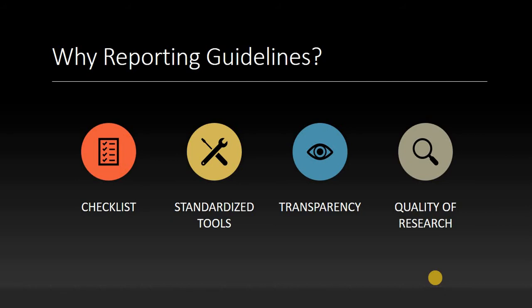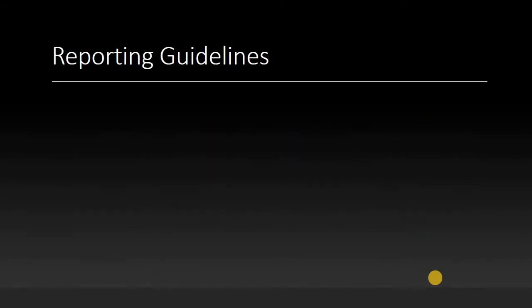We can use these reporting guidelines in three important ways. First, when we are writing our own manuscript, we can use these reporting guidelines and maintain the standard of our research paper. Secondly, when we are doing a peer review or reviewing an article, we can use these reporting guidelines as an objective assessment for the quality of the article. Third, when we are critiquing a journal in our journal club presentations, you can use these reporting guidelines.